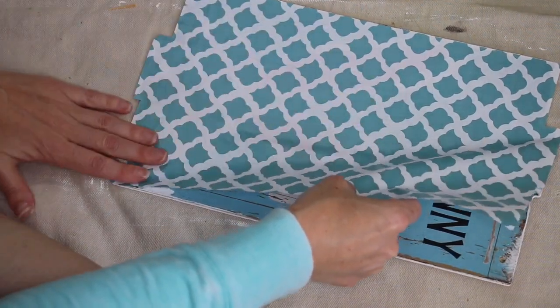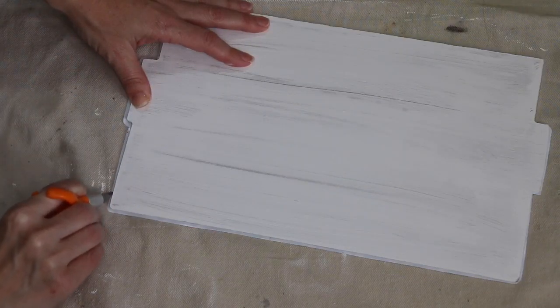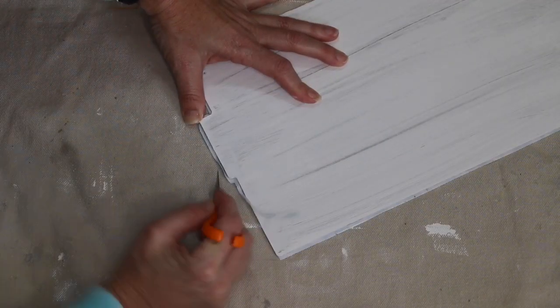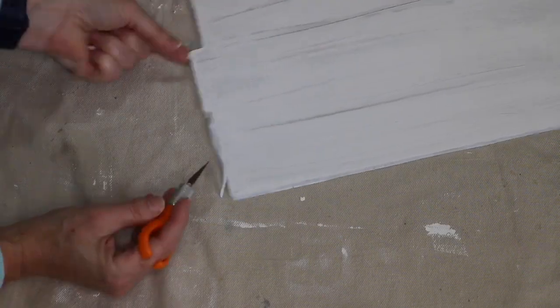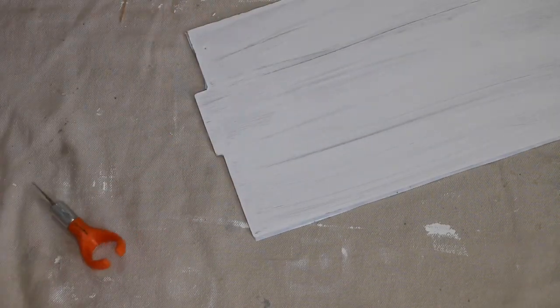Once I had it on to my sign, I did go back in with my craft knife and I did trim up the edges and get off any of the extra that was hanging over on the sides to make it nice and clean. I just really like the finished polished look that this gave the back of my sign.